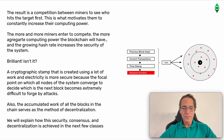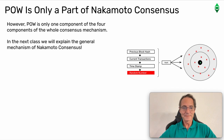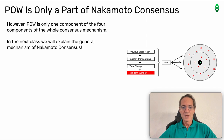Also, the accumulated work of all the blocks in the chain serves as the method of decentralization. We will explain how this security, consensus, and decentralization is achieved in the next few classes. Proof-of-Work is only one component of the four components of the whole consensus mechanism — Nakamoto consensus. In the next class, we will explain the general mechanism of Nakamoto consensus.